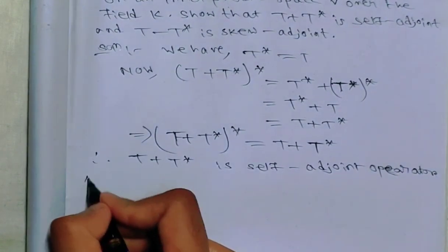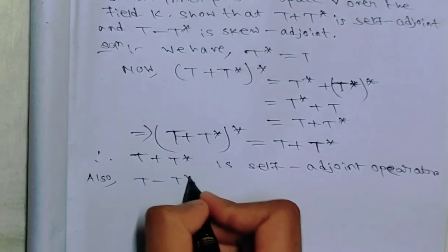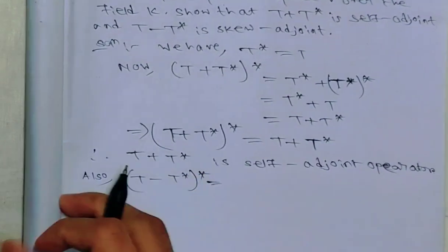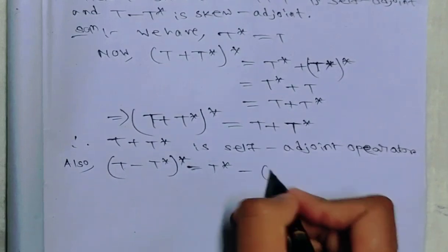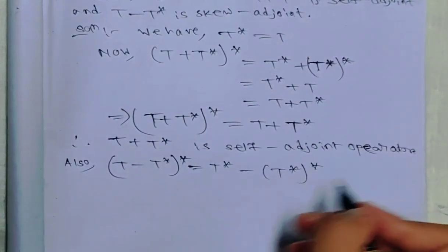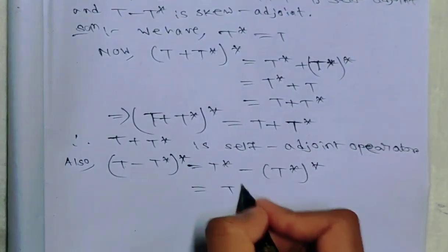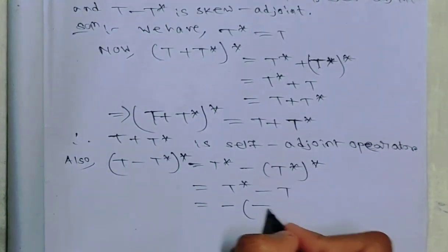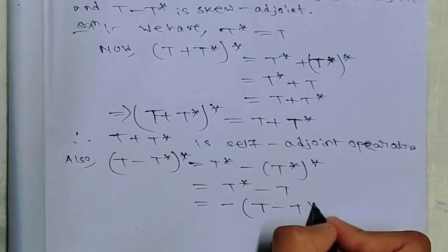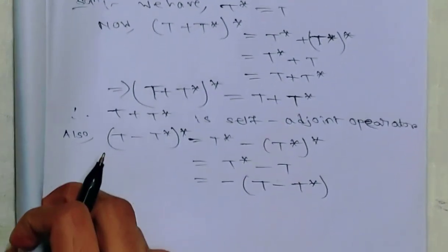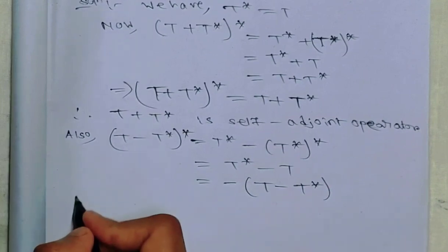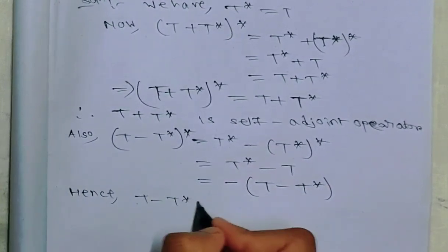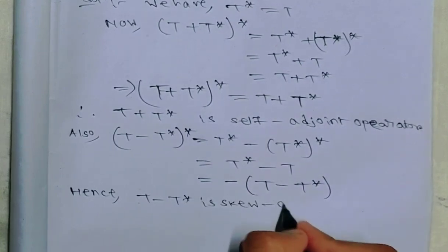Now for T minus T star: (T minus T star) star equals T star minus T star star, which equals T star minus T, which equals minus (T minus T star). This is the definition of a skew-adjoint operator. Hence T minus T star is skew-adjoint.